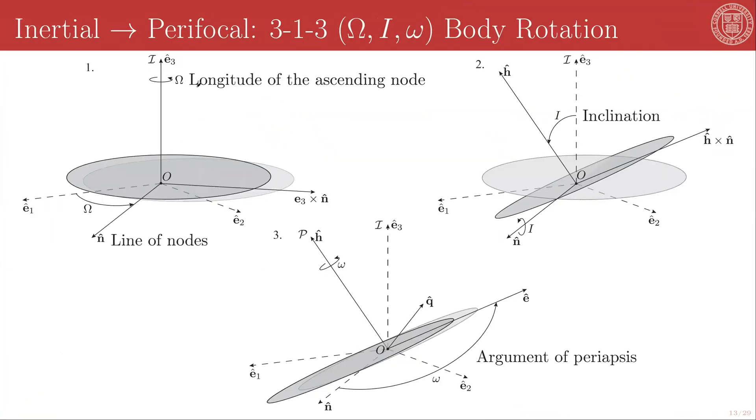By convention, the inertial to parafocal frame mapping is given by a 3-1-3 Euler angle set. Euler angles, as you may recall, are the applications of the simple direction cosine matrices representing rotations about a single body-fixed axis. The 3-1-3 here denotes that we will be rotating about the third axis and then the first new axis of the intermediate frame and then the third axis of the second intermediate frame to get to our final parafocal frame. And the Greek letters represent the angles assigned to each of these rotations.